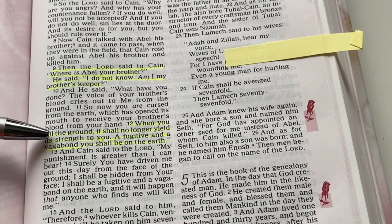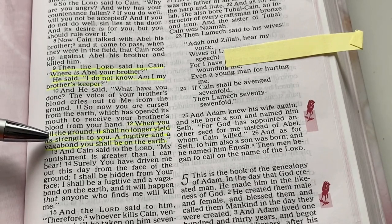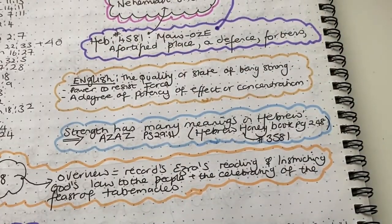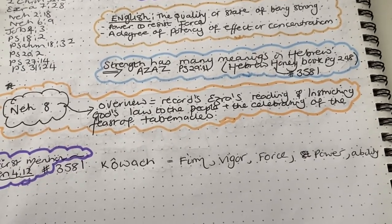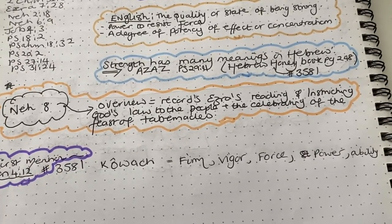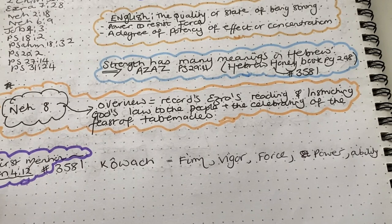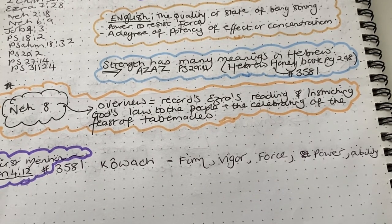So let's have a look at that word strength from Genesis chapter 4 verse 12. So I've already got it written out here. We are going to use the Strong's Concordance. Genesis chapter 4 verse 12.